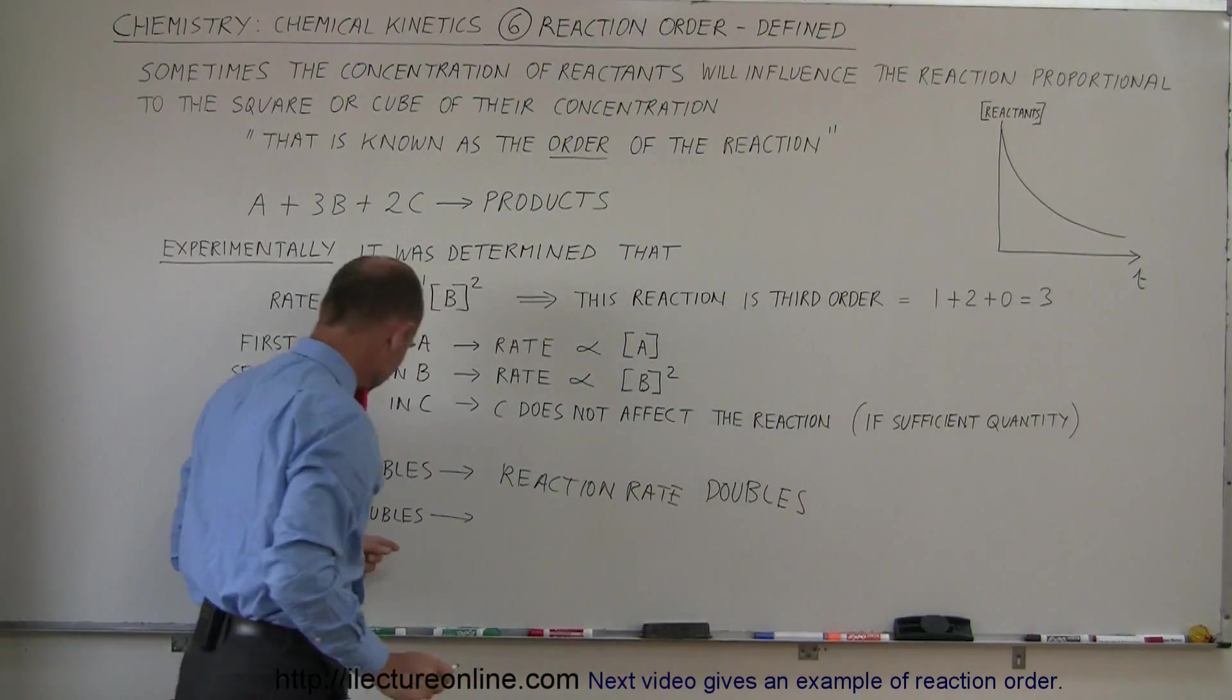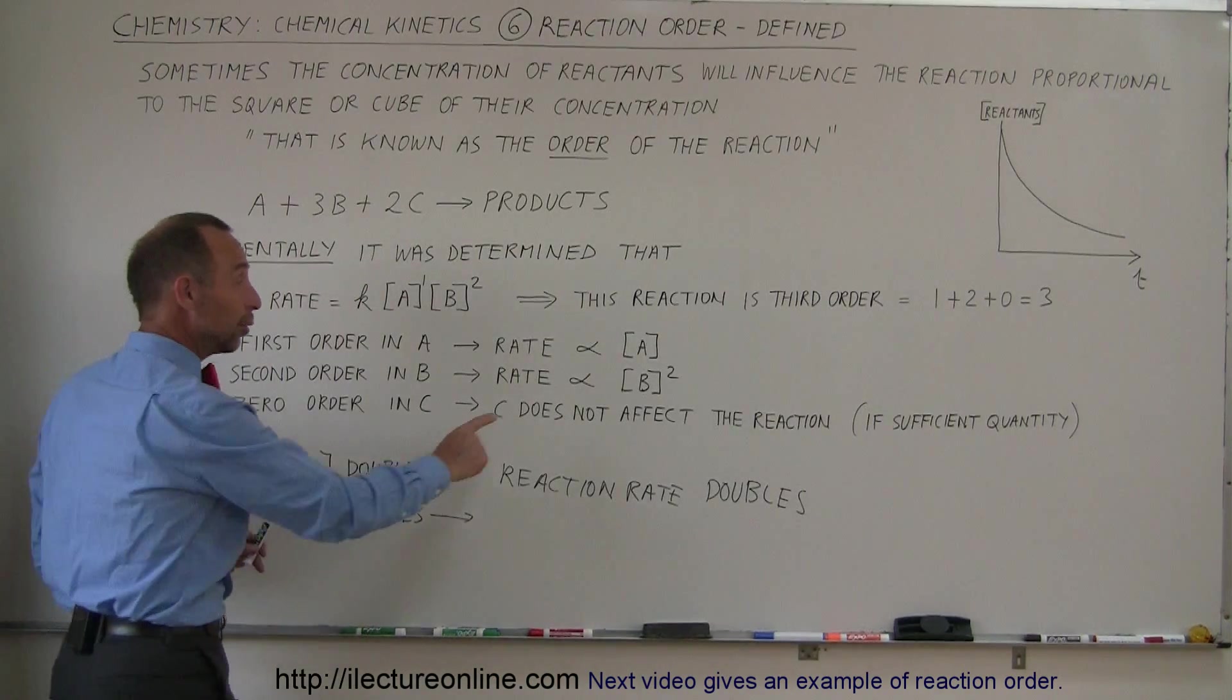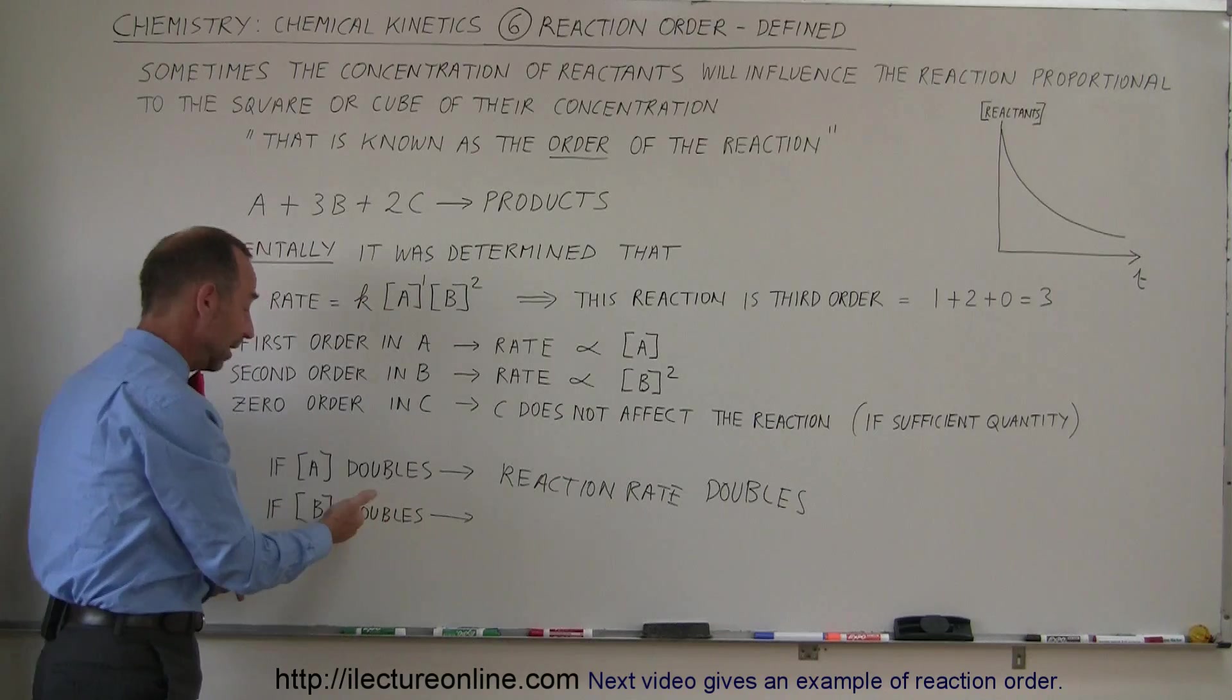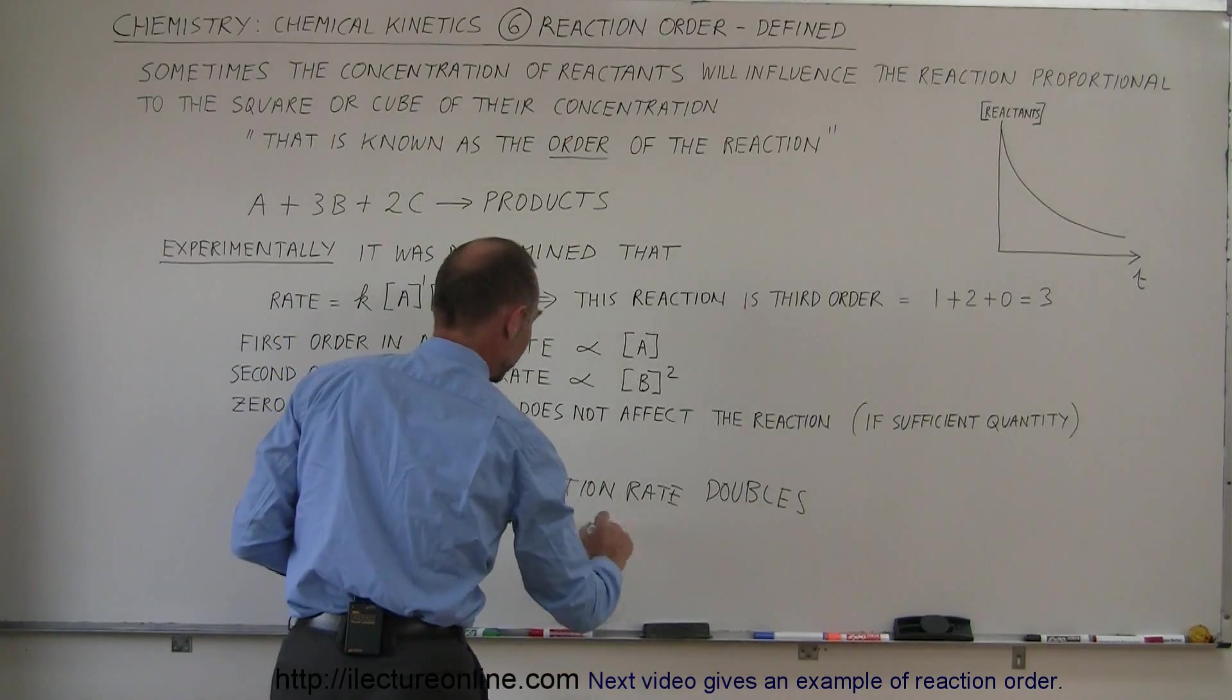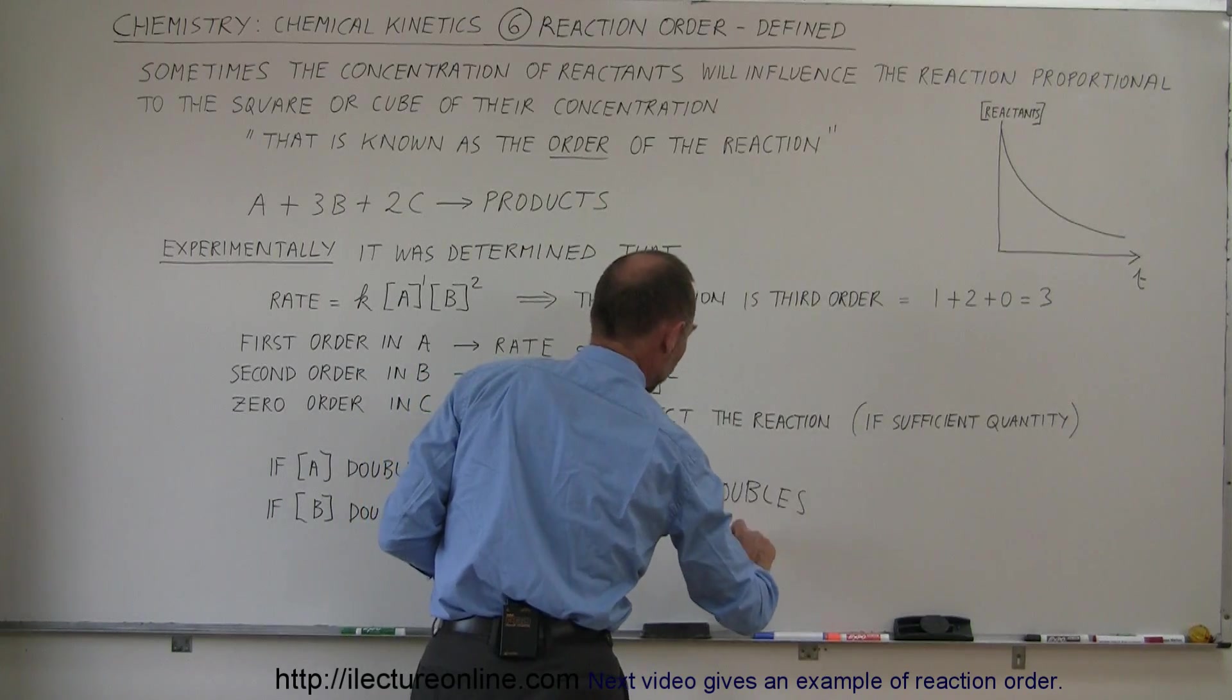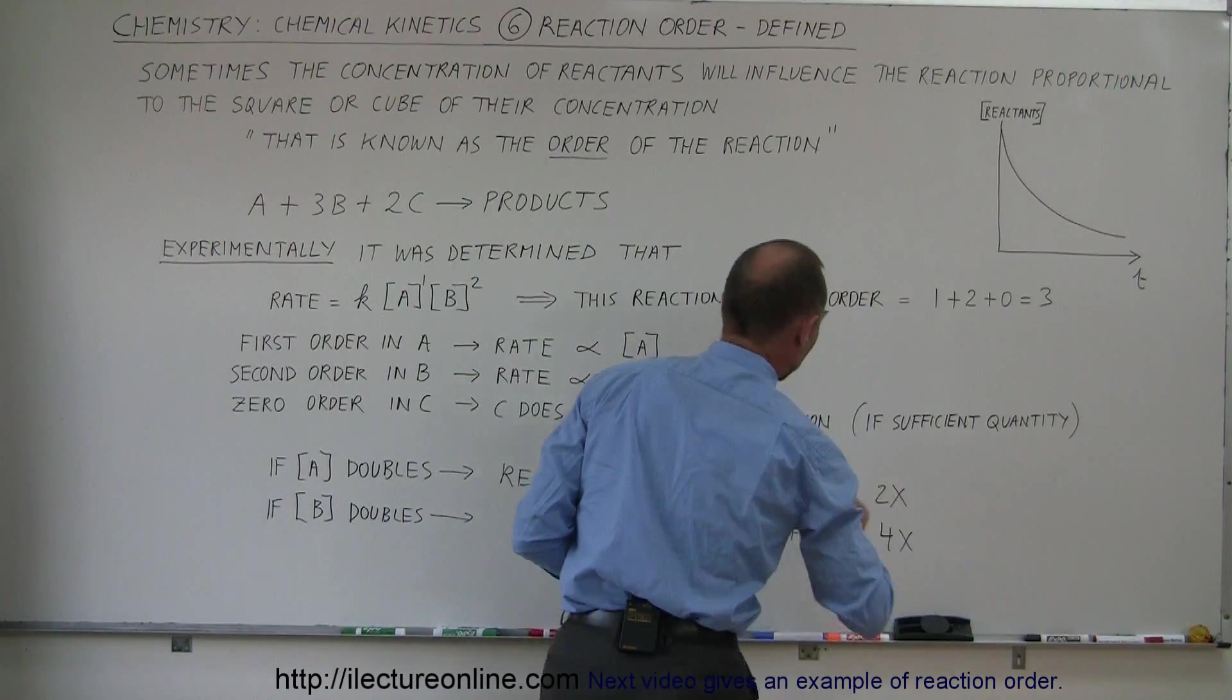And now again, quick quiz, what if the concentration of B doubles? Well since it's second order in B that means if B doubles we'll have four times the rate, so the reaction rate quadruples. So it'll be four times as fast, only two times as fast for A.